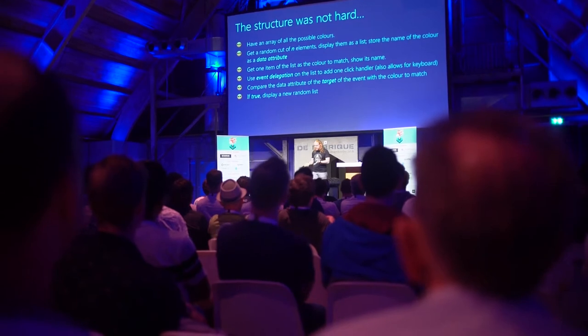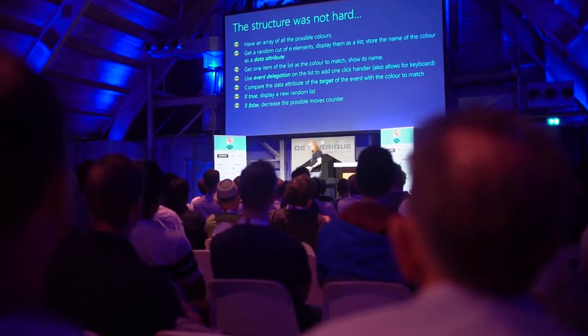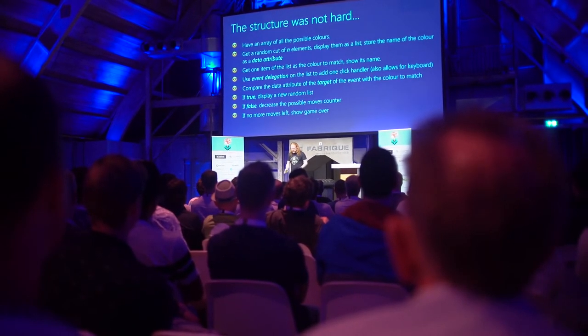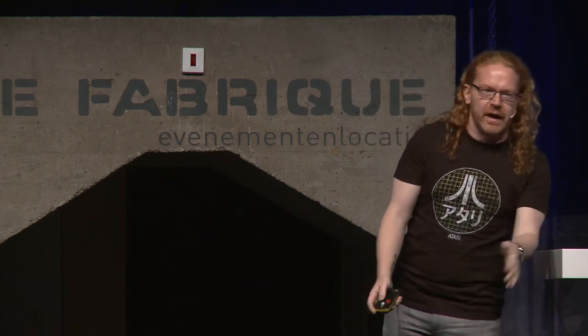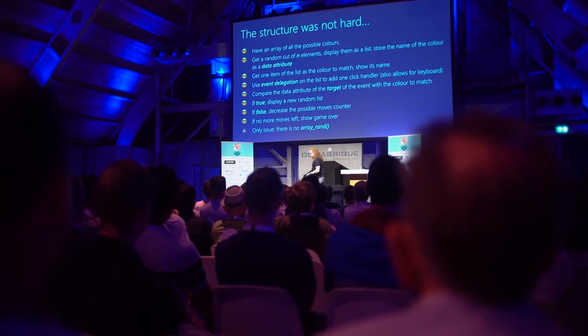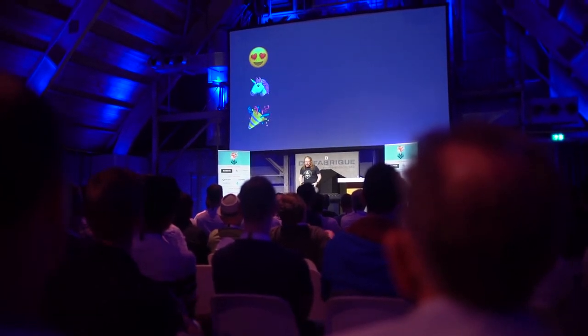I compare the data attribute of the event target with the color to match. If it's correct, I display a new random list. If it's wrong, I decrease the possible moves counter, and if there are no moves left I show game over. The only thing I missed coming from PHP to JavaScript is that there's no array_rand — I've since written it and put it on GitHub, but I had to write a function to do a random array cut every single time.